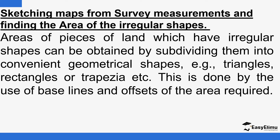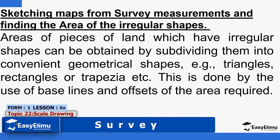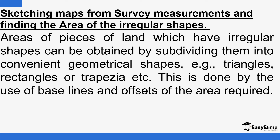The information contained in the surveyor's field book can be used to sketch the map of a given piece of land — how it looks — and from that sketch we are able to find the area of the piece of land, which is irregular in shape. Areas of pieces of land with irregular shapes can be obtained by subdividing them into convenient geometrical shapes, e.g. triangles, rectangles, or trapezia. This is done by use of baselines and offsets of the area required.